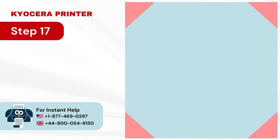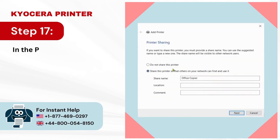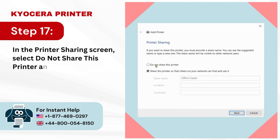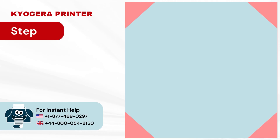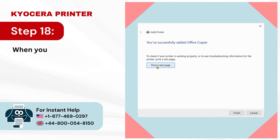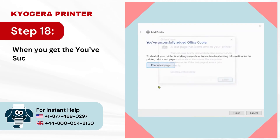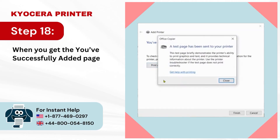Step 17: In the Printer Sharing screen, select Do Not Share This Printer and click Next. Step 18: When you get the You've Successfully Added page, you can print a test page or click on Finish.